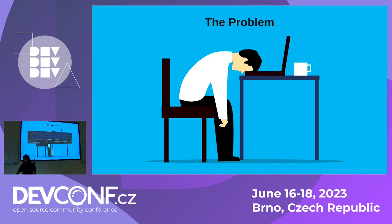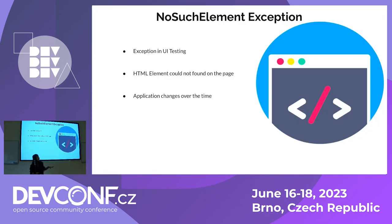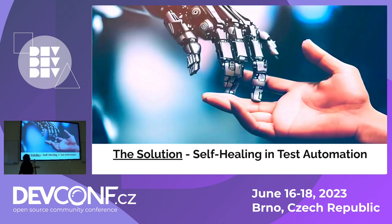The problem is being unable to locate an element — that is, the 'NoSuchElementException'. This exception occurs when you are creating new UI test cases, and it happens when there is an application change, a locator change, or any property that has been changed for a specific application. The solution is self-healing in test automation. Self-healing in test automation is one of the techniques provided by AI-based testing tools.